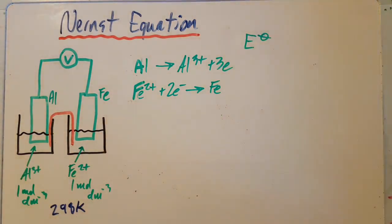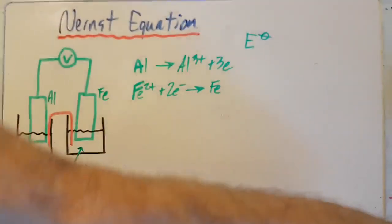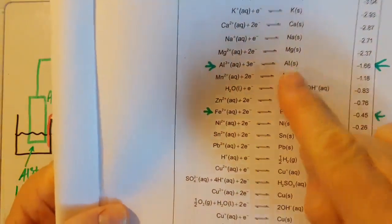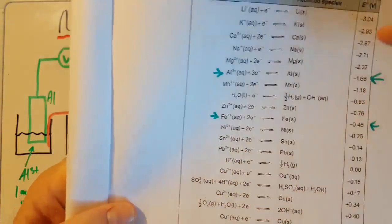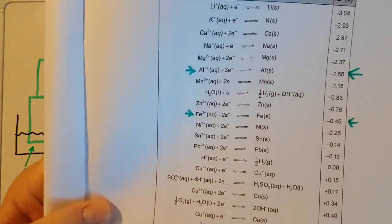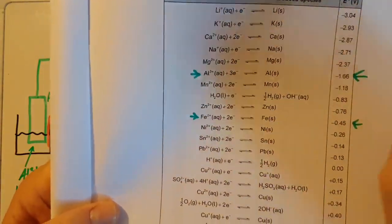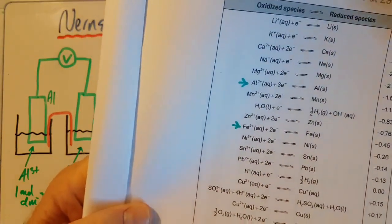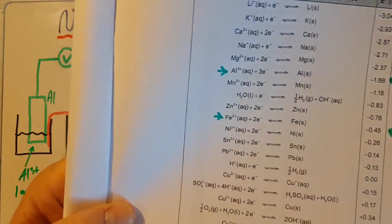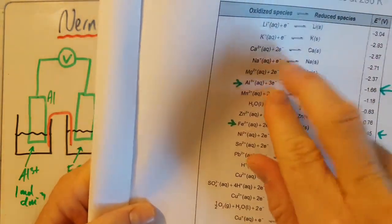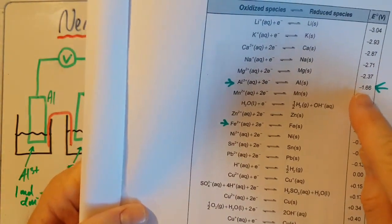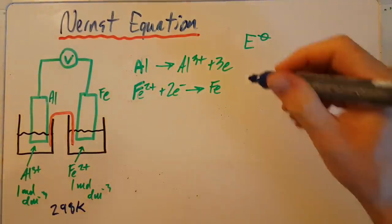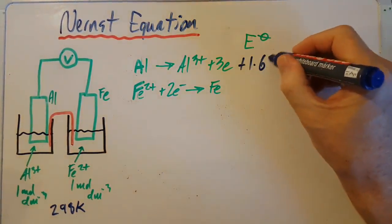Where did I get these two half equations from? Well, from the data booklet on page 23, you can see there's aluminum and there's iron. How do I know that I have to flip this one round? Flip the most negative, flip the one that's higher up on this list. So you flip that one round and if I flip that one round I'm going to change the sign on that. So it's going to go from minus 1.66 to plus 1.66 volts.